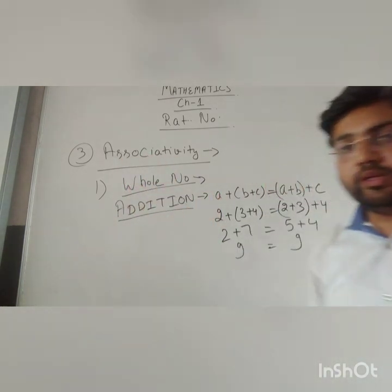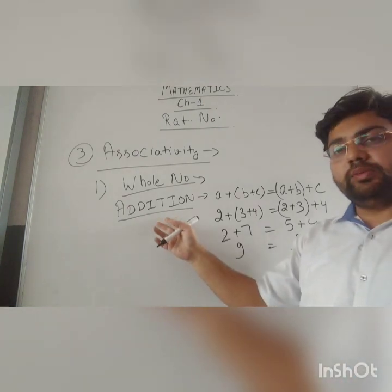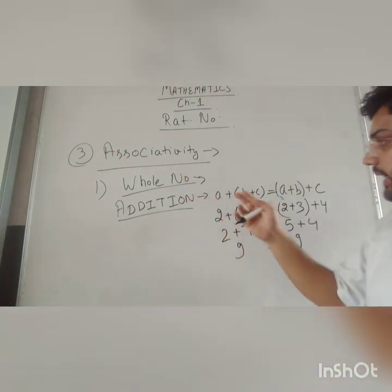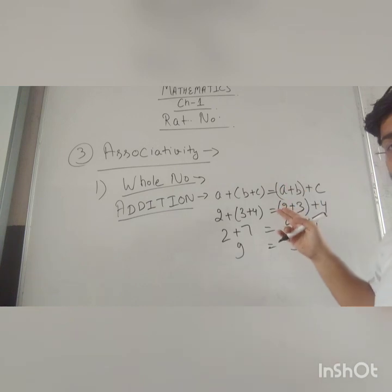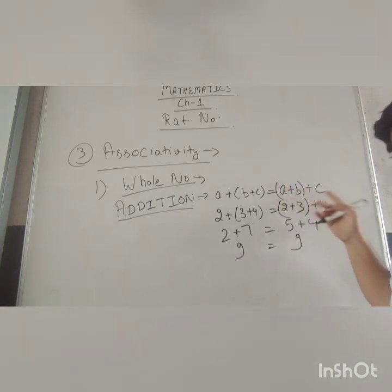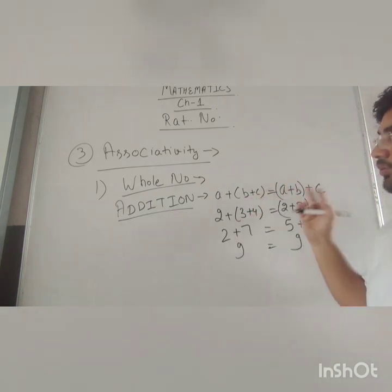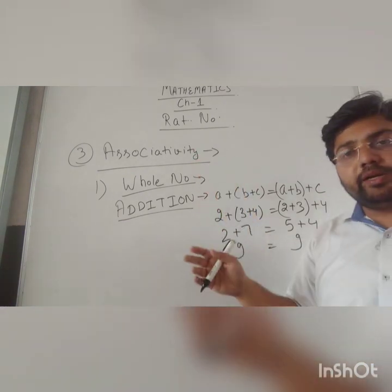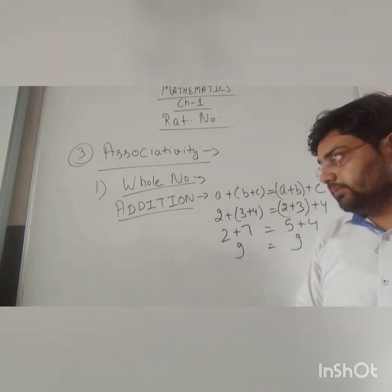First in whole numbers. During the addition of whole numbers, what this property says is a plus b plus c should be equal to a plus b plus c. If this is true, then the associativity property is valid in the case of addition of whole numbers.